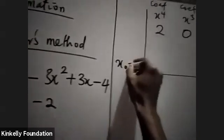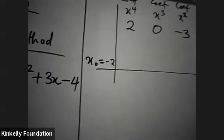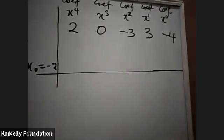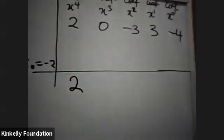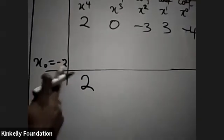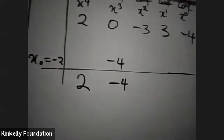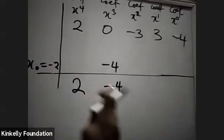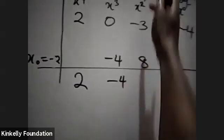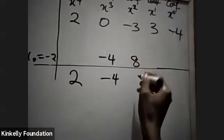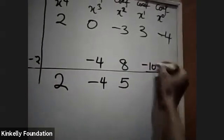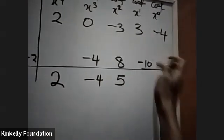And you are told to approximate it at s equal to s naught equal to minus 2. How do you do it? The first thing you do is to bring this first coefficient down. Now, minus 2 times 2 is minus 4. You write it here. This plus this is minus 4. Now, minus 2 times minus 4 — you write it here under this one. This plus this is positive 5. Now, minus 2 times 5 is minus 10. You write it under this. This plus this is minus 7.